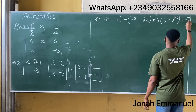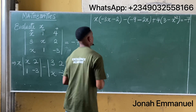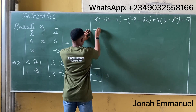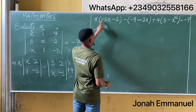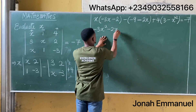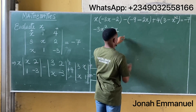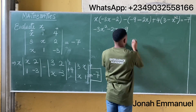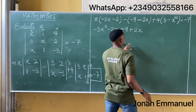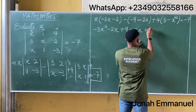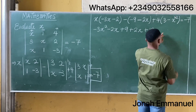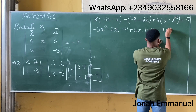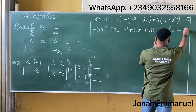That is equal to minus 7. Now I expand the brackets: x times minus 3x gives minus 3x squared; x times minus 2 gives minus 2x. Minus times minus 9 gives plus 9; minus times minus 2x gives plus 2x. Plus 4 times 3 gives plus 12; plus 4 times minus x squared gives minus 4x squared. All equal to minus 7.